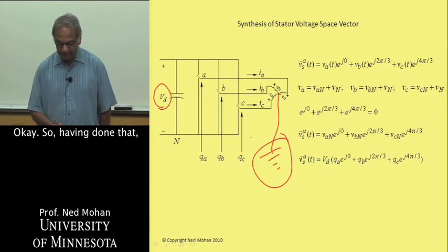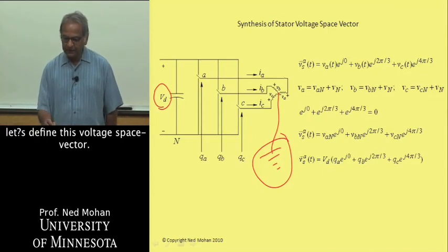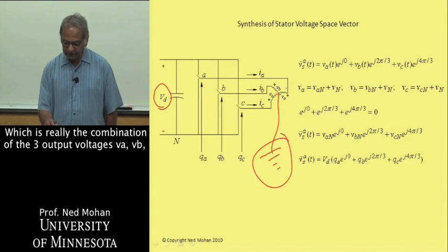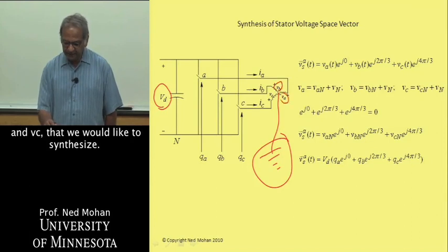Having done that, let's define this voltage space vector, which is really the combination of the three output voltages, VA, VB, and VC, that we would like to synthesize.